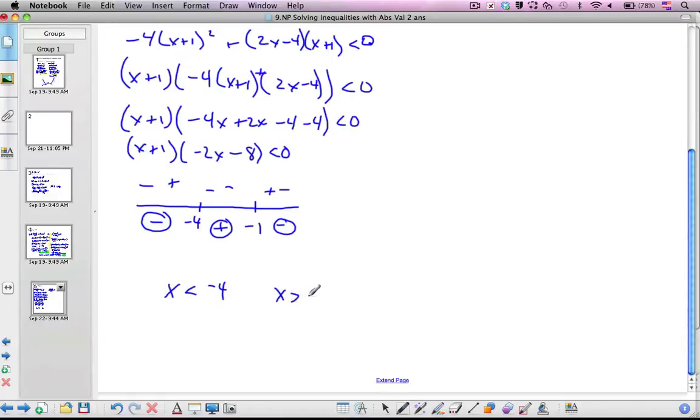So from this side of the equation, I can say that x has to be less than negative 4. And x has to be bigger than negative 1. Okay, that's the one side.